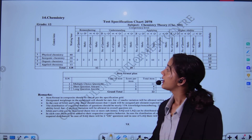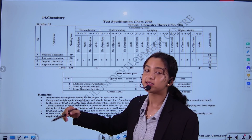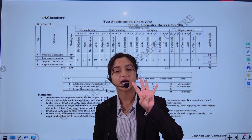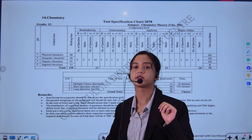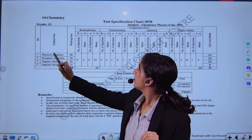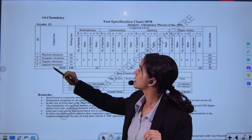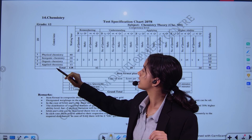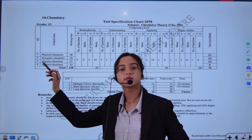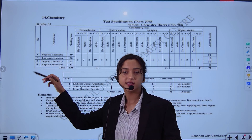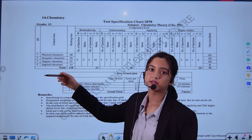Let's talk about chemistry. We are divided into 4 main parts: Physical chemistry, Inorganic chemistry, Organic chemistry, and Applied chemistry. What is physical chemistry? It includes numericals, derivations, and other parts.